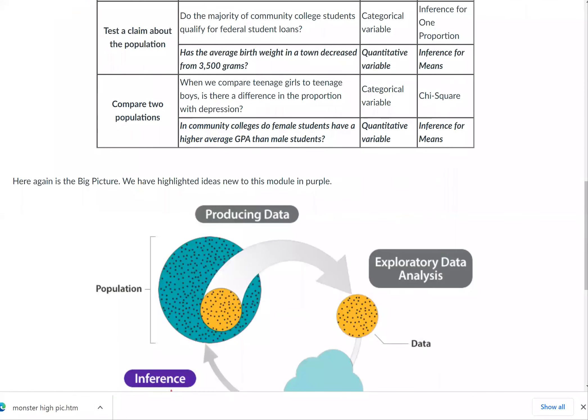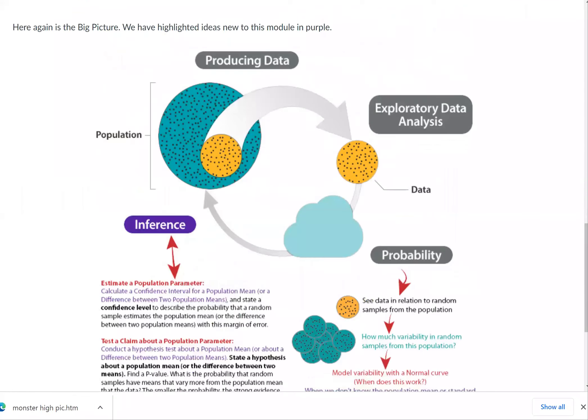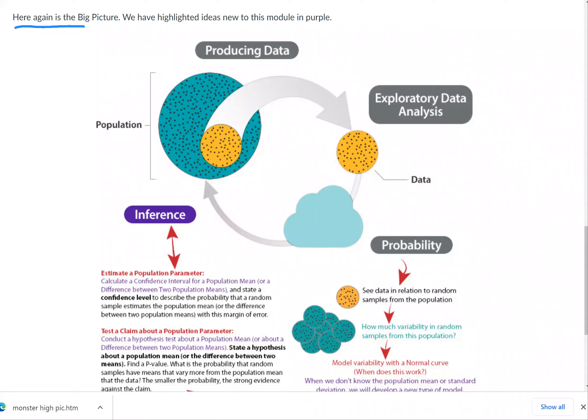Now what else are we going to look at? We're going to go back to the big picture. I know we've seen this a lot, but just to reiterate everything again: here's the big picture. We've highlighted ideas new to this module in purple. So we know the same old same old: we have a population, we produce data, we explore data analysis.